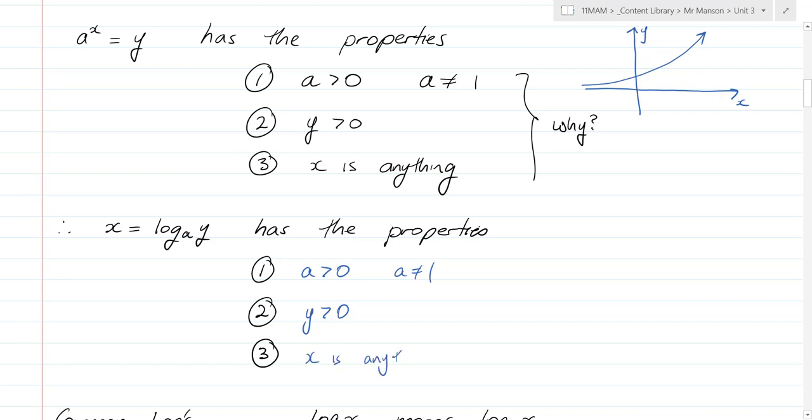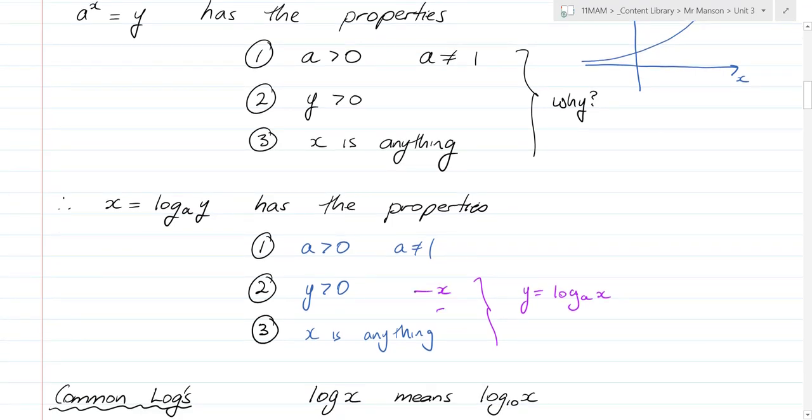So a is greater than 0 and doesn't equal 1. I know that y has to be greater than 0, you cannot do log of a negative number. We've spoken about that. And x can be anything. But just keep in mind that this typically is flipped.